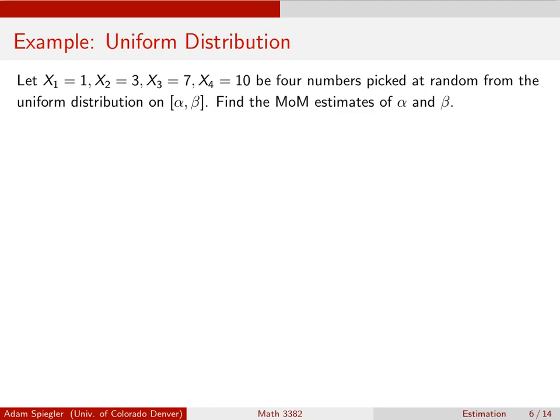Okay, so for a uniform distribution, recall we had some shortcuts for the first and the second moments. So for example, the first moment is the expected value, and for a uniform distribution it's the midpoint between alpha and beta. So it's alpha plus beta divided by two.